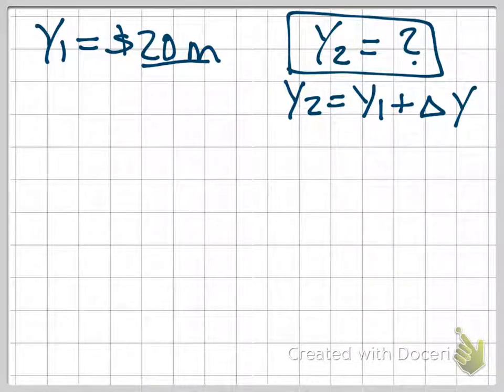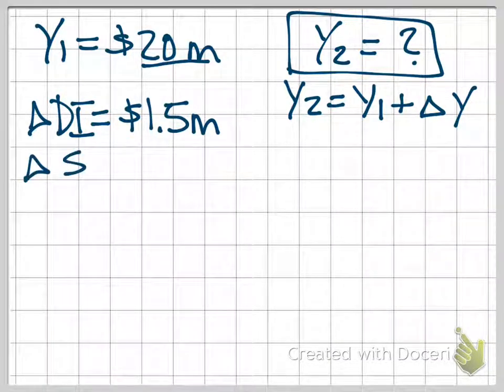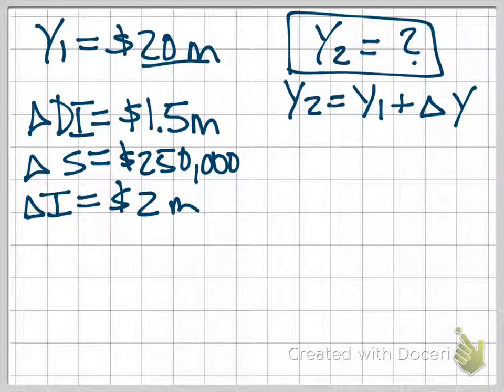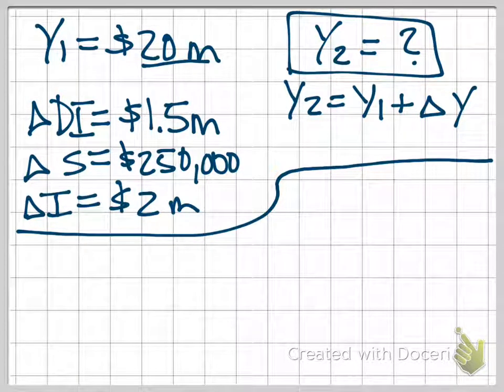Back over here to the other things that we know. We know that our change in disposable income, it went from $4 million to $5.5 million. So it's $5.5 minus $4 or $1.5 million. We know that our change in savings is $250,000. And we know that investment spending is going to go up by $2 million. So those are all of the things that we know. And we're going to use those then to solve for Y2. What is real GDP demanded now?